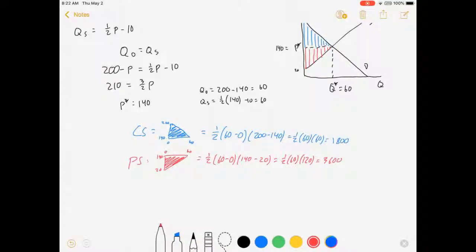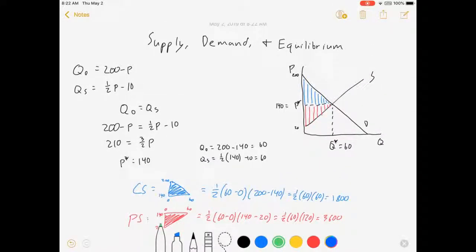And then total surplus in this market is just all the surplus that exists. In this case, it's just consumer surplus plus producer surplus. So, it's 1,800 plus 3,600 equals 5,400. It's the area of both of these triangles.